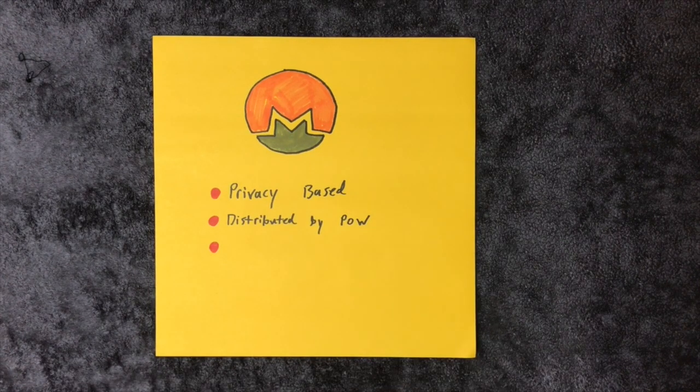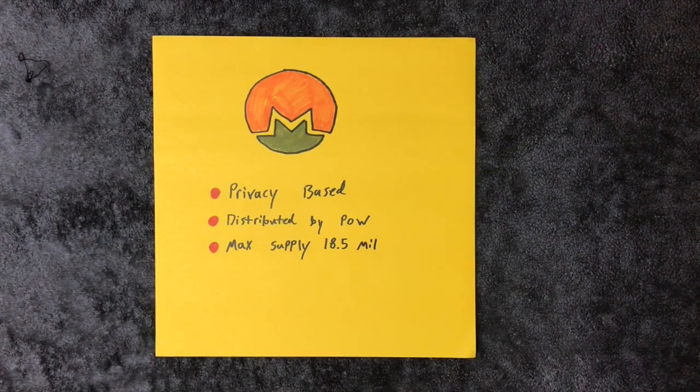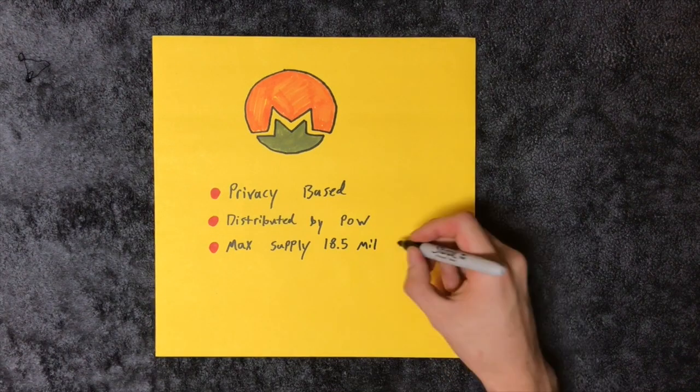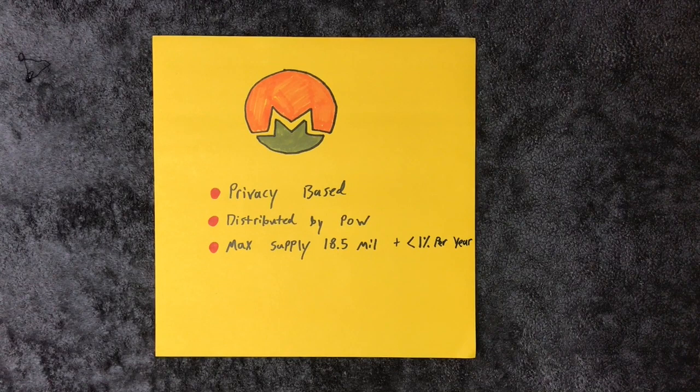Instead of a max supply, Monero has a tail emission. After the initial 18.5 million coins are mined, there will be around 150,000 new coins minted per year to keep miners incentivized. This amounts to a little less than 1% inflation per year.